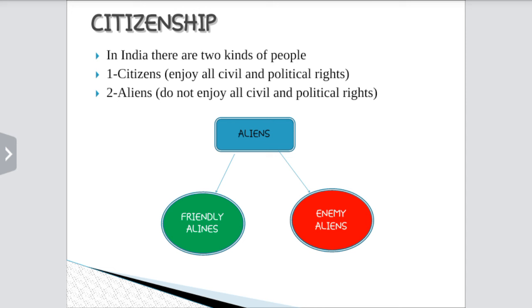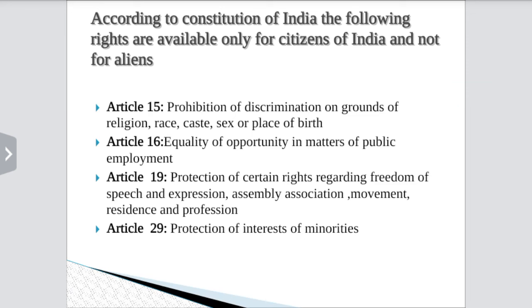Aliens are of two kinds: friendly aliens and enemy aliens. Friendly aliens are the citizens of another country who have cordial or good relations with India. Enemy aliens are the citizens of a country which had war with India.